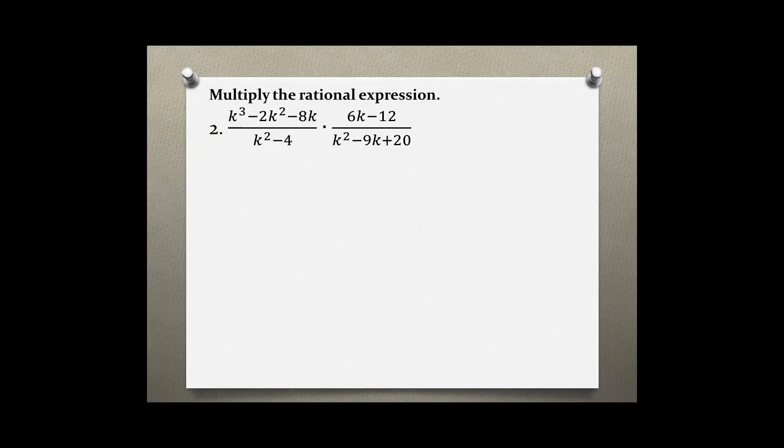Multiply the rational expression. This is problem number two: (k³ - 2k² - 8k)/(k² - 4) times (6k - 12)/(k² - 9k + 20).